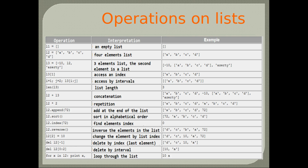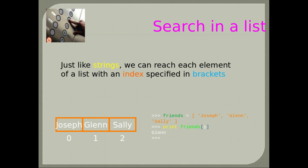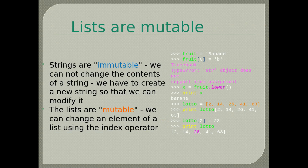Lists and loops are very good friends — each element in the list gets printed with a for loop. Just like strings, we can reach each element of a list with an index specified in brackets. Lists are mutable while strings are immutable. We cannot change the contents of a string — we have to create a new string to modify it. You get an error when you try to reassign a value of a string's letters. For lists, we can change an element using the index operator.